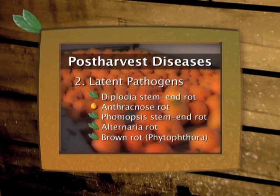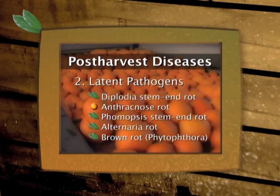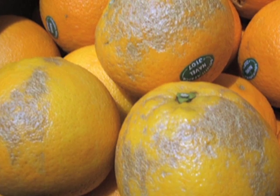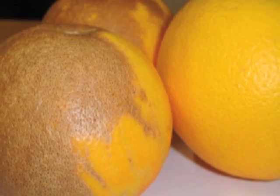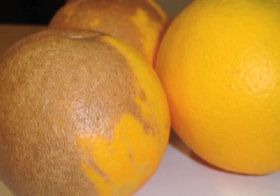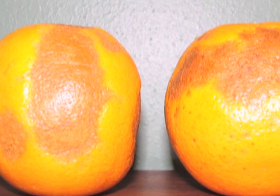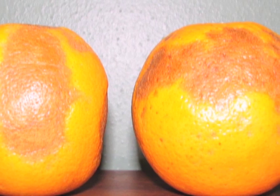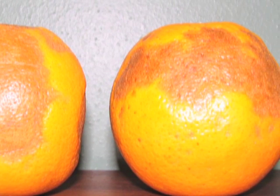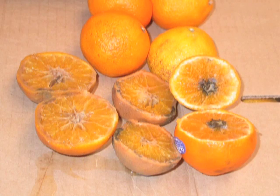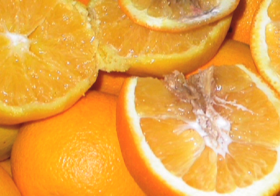Anthracnose rot is common in citrus orchards and all citrus types, especially soft citrus. Spores are produced on dry twigs and dead tissue in the tree, from where they spread to young fruitlets by wind, rain and insects. The fungus penetrates the rind through injuries or insect punctures and remains latent until conditions are favourable for it to grow. These favourable conditions occur when fruit is over mature or injured. Young fruit can sometimes be attacked while still on the tree, by fungus growing into the fruit from deadwood.